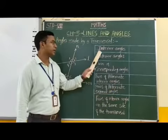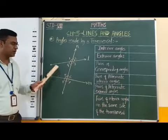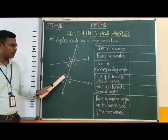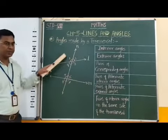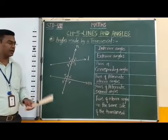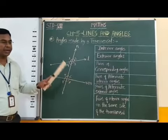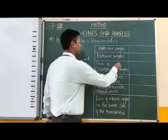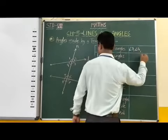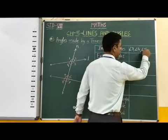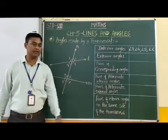First, interior angles. If you observe this figure, angle 3, angle 4, angle 5 and angle 6 are in the interior part of this figure. Therefore angle 3, angle 4, angle 5 and angle 6 are the interior angles.